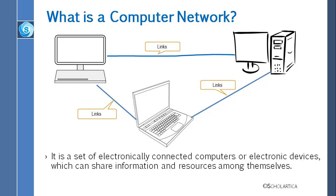A computer network allows computers, also known as nodes, to exchange data. In computer networks, network computing devices pass data to each other along data connections, also known as communication links.